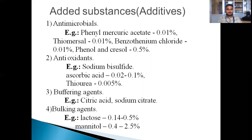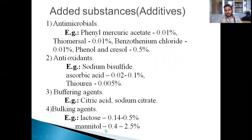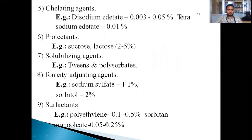Buffering agents include citric acid and sodium citrate. Bulking agents include lactose and mannitol. These are the examples of buffering agents, bulking agents, and antibacterial agents.